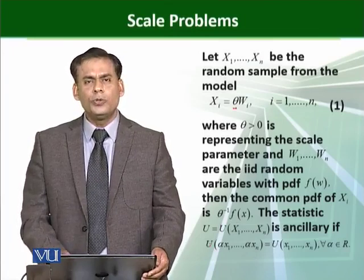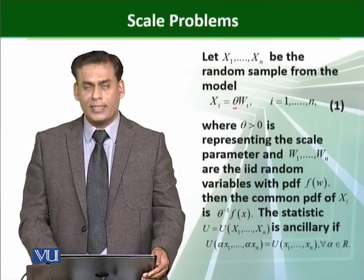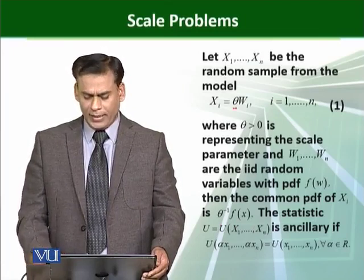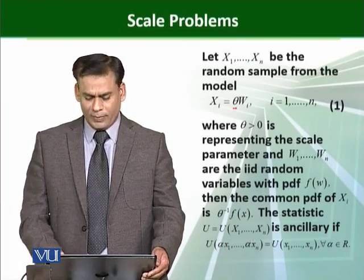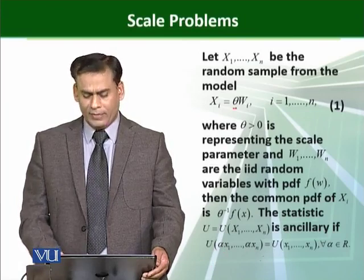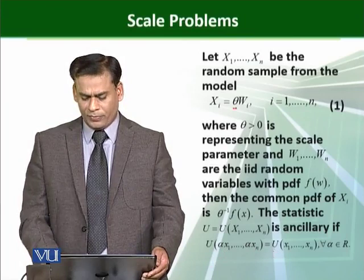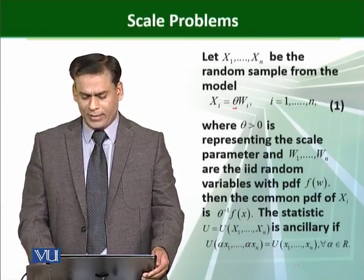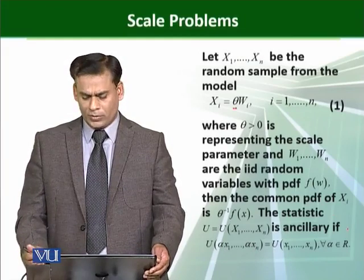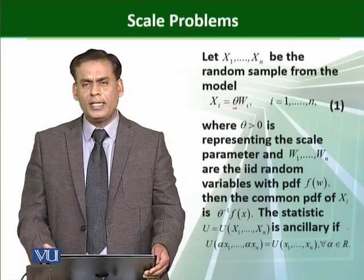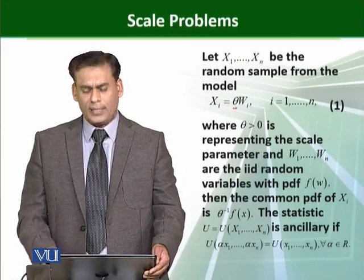The statistic U = U(X1, ..., Xn) is ancillary if U(αX1, ..., αXn) = U(X1, ..., Xn) for all α ∈ ℝ. Then we say that it is an ancillary statistic.